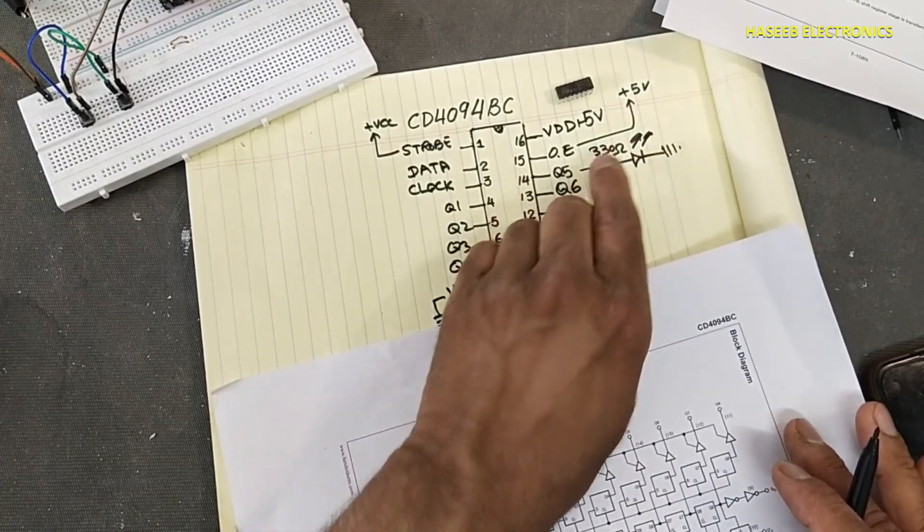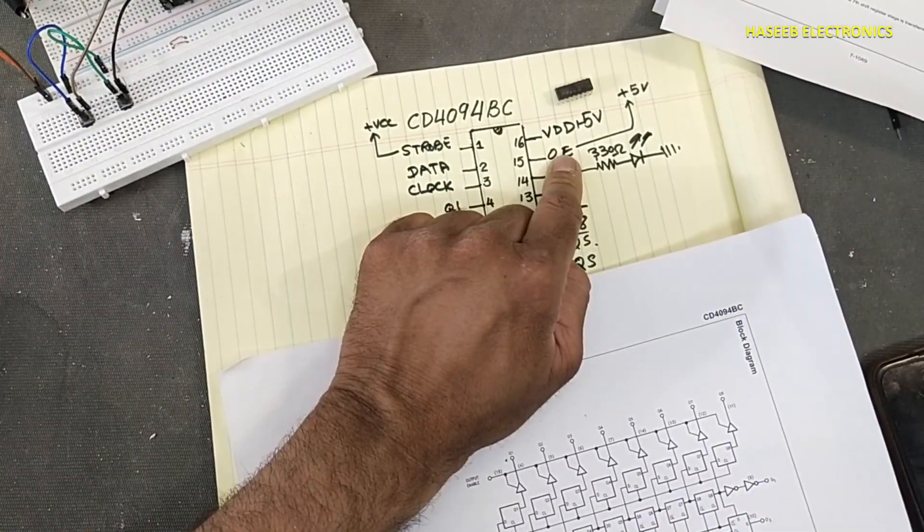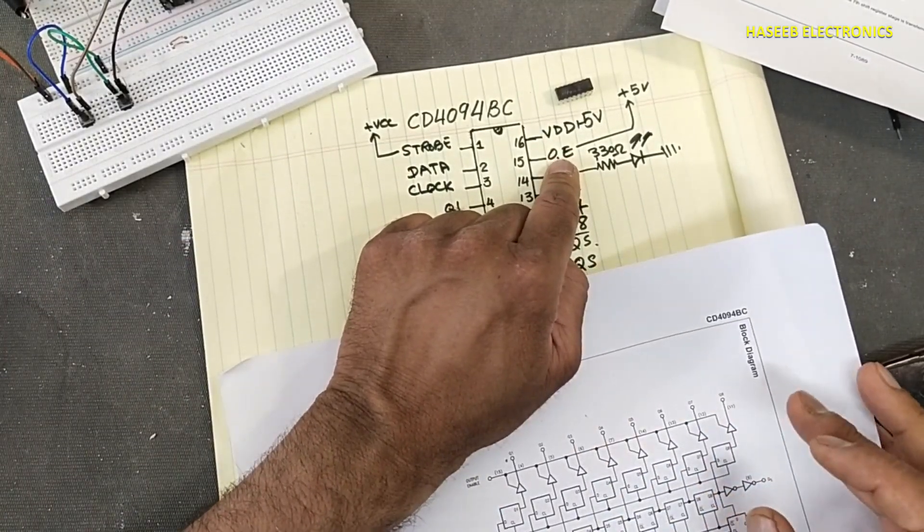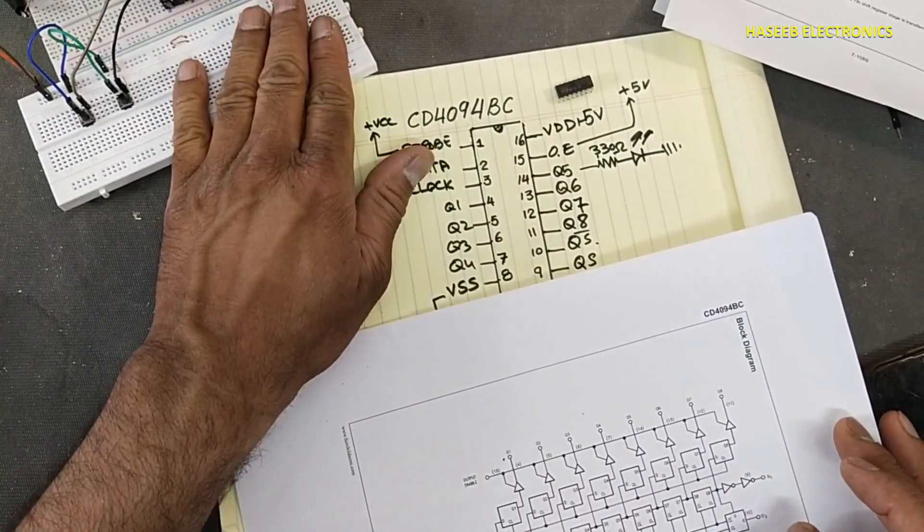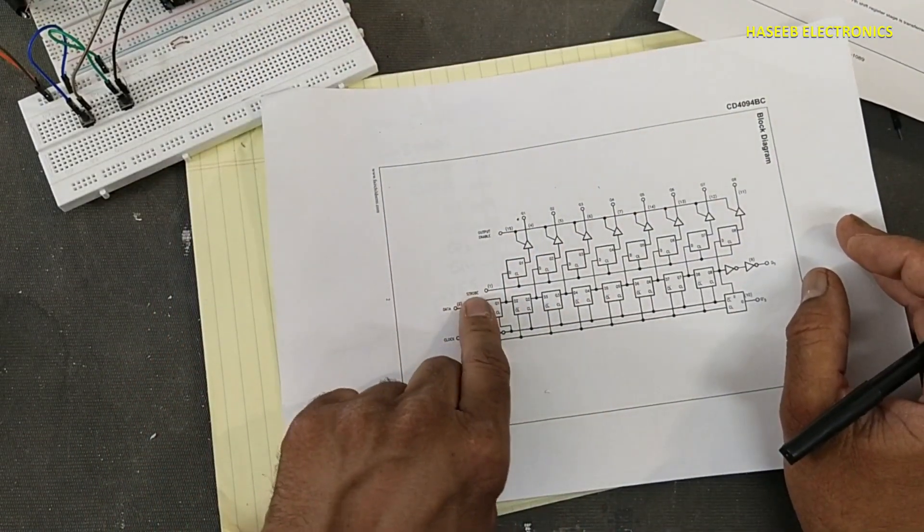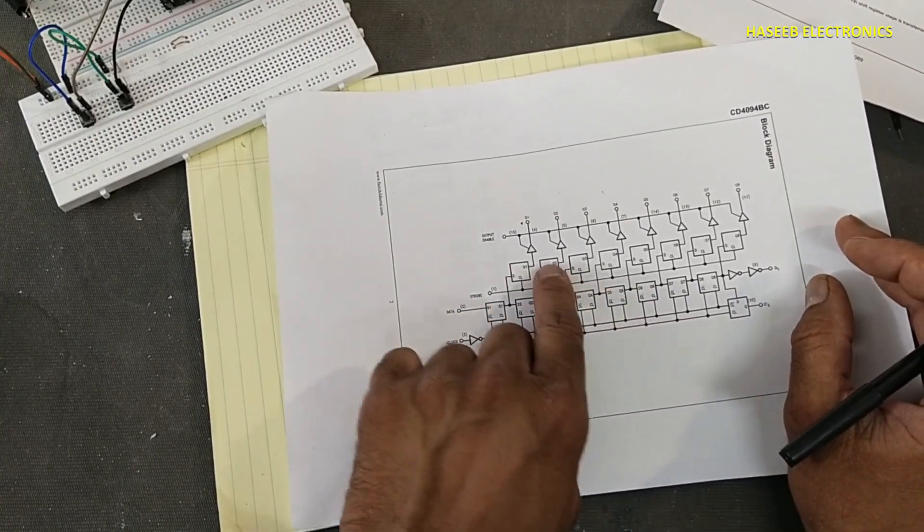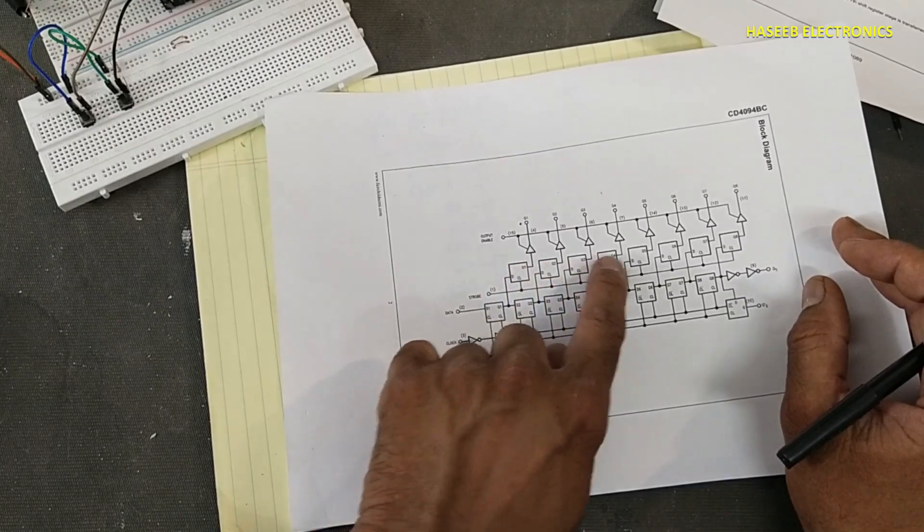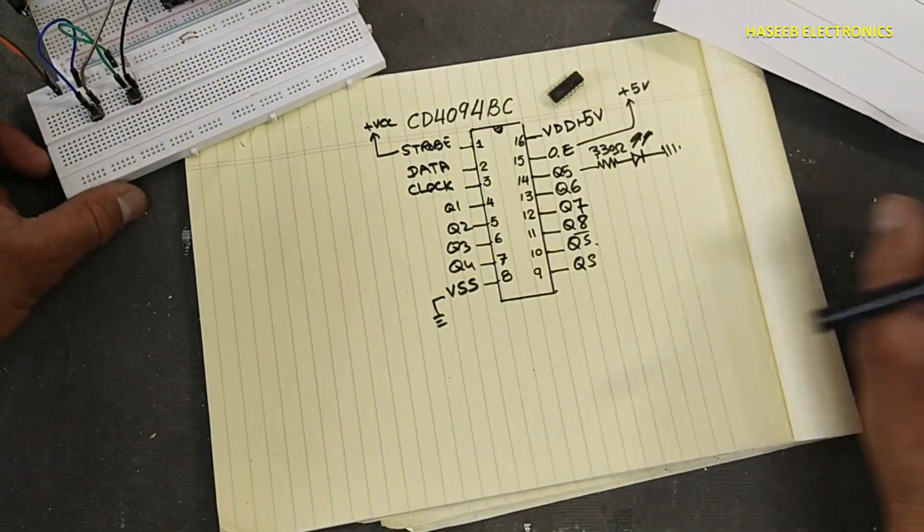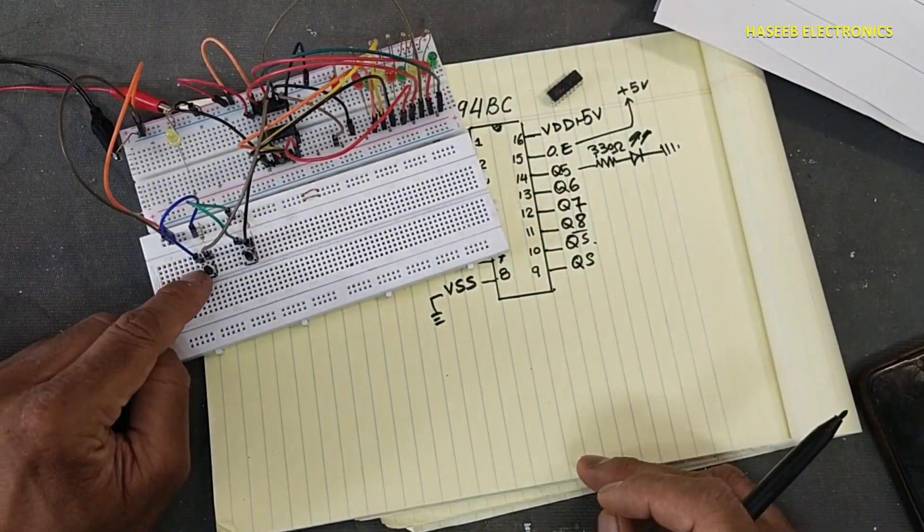We can turn off output at any time. This IC will keep functioning, just we can turn off output by connecting output enable pin and strobe pin to ground. When we will connect ground at pin number 15, its output stage will turn off. If we will connect pin number one strobe pin to ground, it will not load any data into the latch.